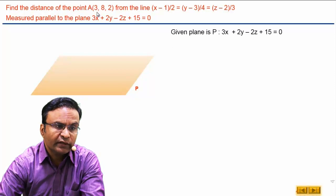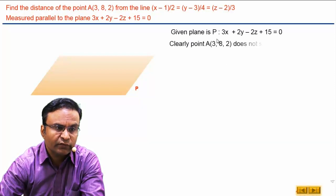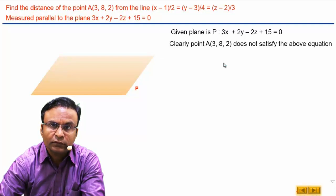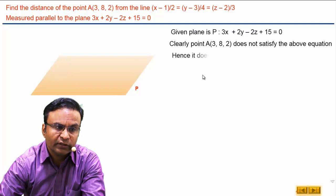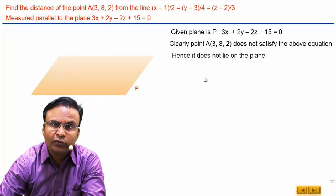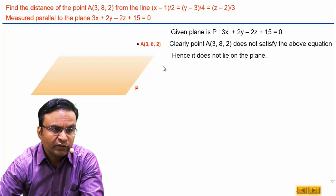Clearly this point 3, 8, 2 does not satisfy the equation of plane. That means this point is not lying on the plane. This point will be external to this plane somewhere. Here is point A.